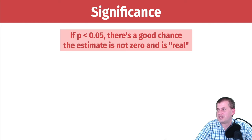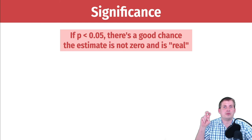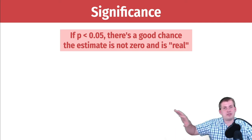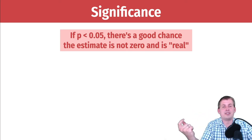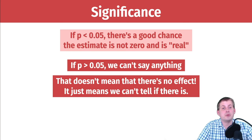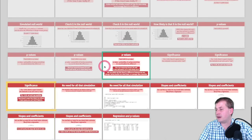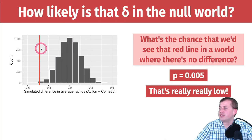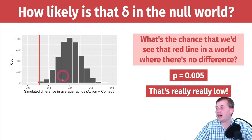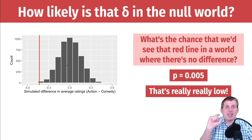Because we know it's not zero, we can talk about significance. The general guideline in statistics is a threshold of 0.05. If p is less than 0.05, there's a good chance the estimate is not zero and is real — not meaning it's exactly 0.43, just that it's definitely not zero and there is an effect out in the world. If p is greater than 0.05, we can't say anything — that does not mean there's no effect, just that we can't tell if there is one.